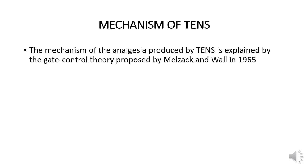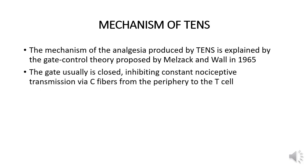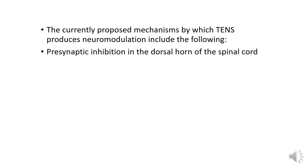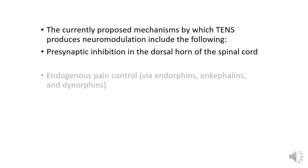The mechanism of analgesia produced by TENS is explained by the gate control theory, proposed by Melzack and Wall in 1965. The gate is usually closed, inhibiting constant nociceptive transmission via C fibers from the periphery to the T cell. The currently proposed mechanisms by which TENS produces neuromodulation include presynaptic inhibition in the dorsal horn of the spinal cord.